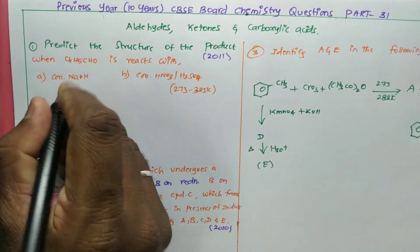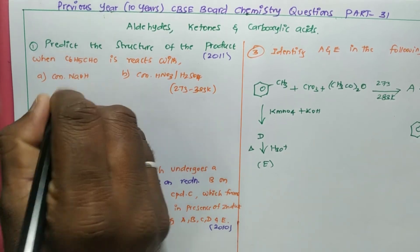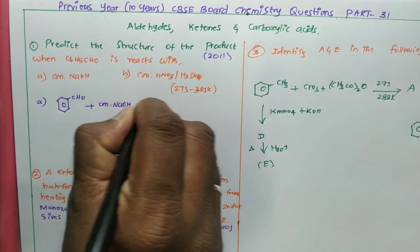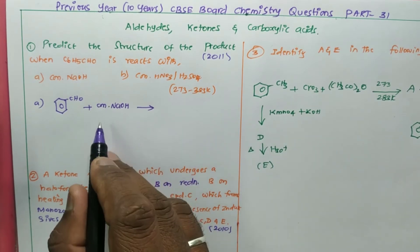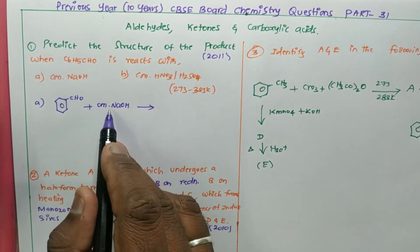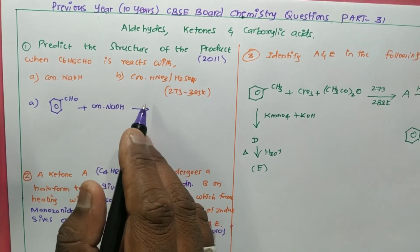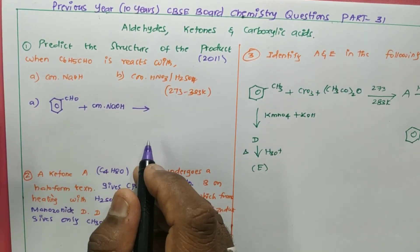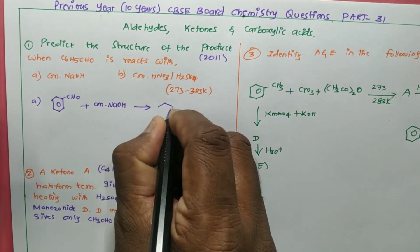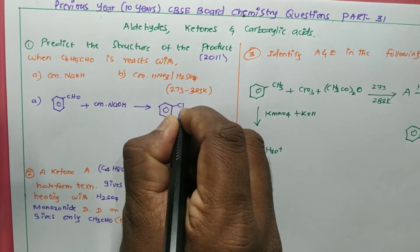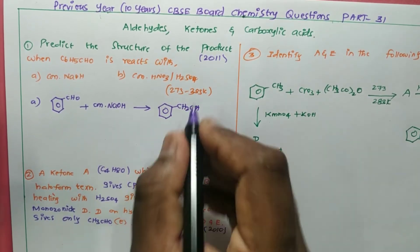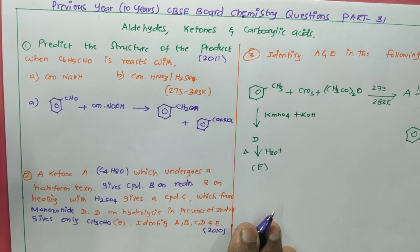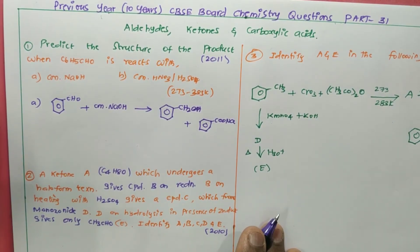First we have to react benzaldehyde with concentrated sodium hydroxide. When benzaldehyde reacts with concentrated sodium hydroxide, this is the famous Cannizzaro reaction. Aldehydes without alpha hydrogen will react with sodium hydroxide to form two different products — one is an acidic product and one is an alcoholic product. So here I will be getting benzyl alcohol (with OH group) along with the salt of sodium benzoate. These are the two different products when it reacts with sodium hydroxide.